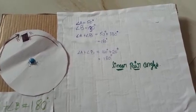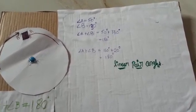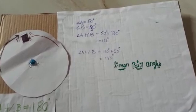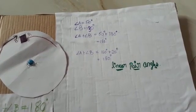The angles are said to be linear if they are adjacent to each other after the intersection of the two lines. The sum of angles of a linear pair is always equal to 180 degrees.